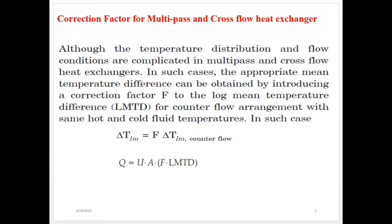Now coming to correction factor — at what situation do we have to use this correction factor? LMTD relations derived are only applicable for parallel flow and counter flow heat exchangers only. Other than parallel flow and counter flow heat exchangers, LMTD temperature cannot be considered as mean temperature difference. In such cases, the appropriate mean temperature difference can be obtained by introducing a correction factor F to the log mean temperature difference for counter flow arrangement with the same hot and cold fluid temperatures. That is, delta TLM, the mean temperature difference, is calculated by multiplying LMTD by this correction factor F.